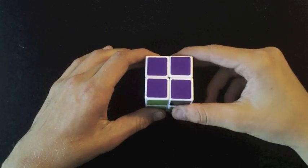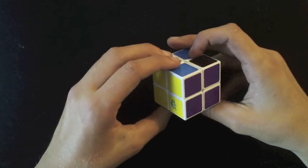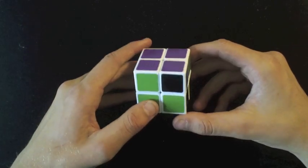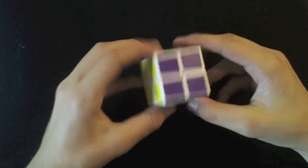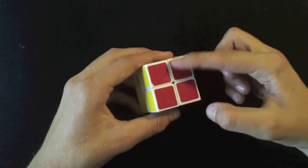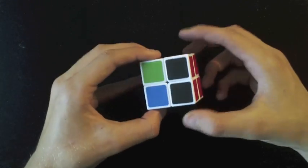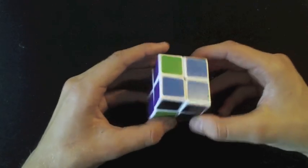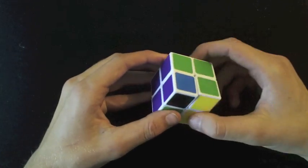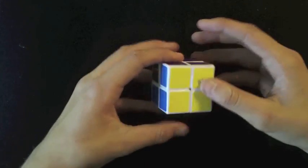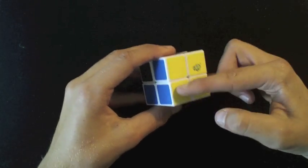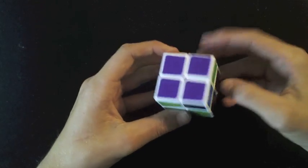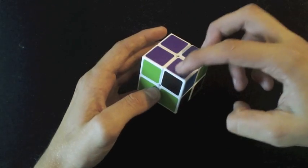The next one is an algorithm known by 3x3 Fridrich users, and how you recognize it is you check on your bottom color, and everything is done on that layer. If I turn it around, as you can see, all the colors are next to each other, which is what we want. On the top, you see we have a 2x1 block already done. The algorithm is just going to be a T U perm, if you know it, and what it does is it swaps these pieces.